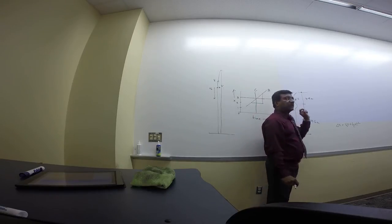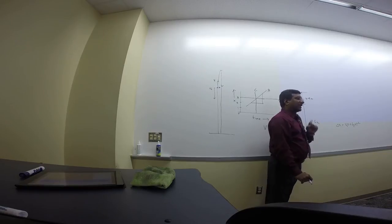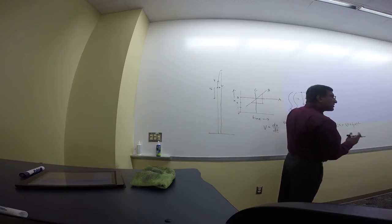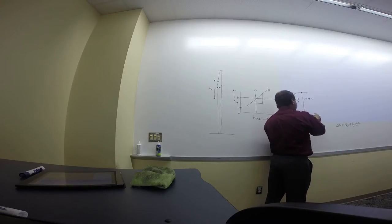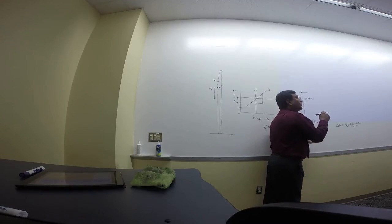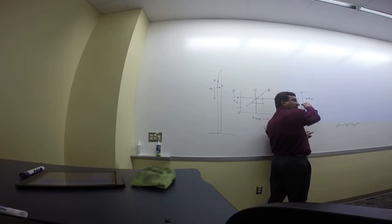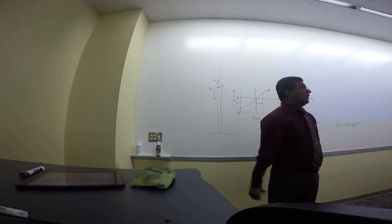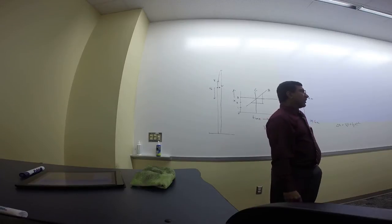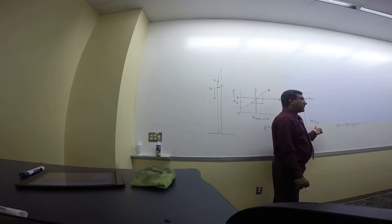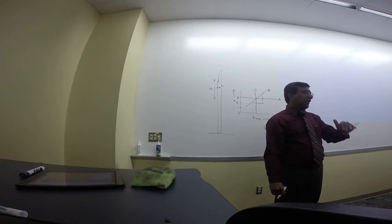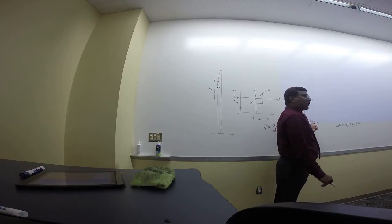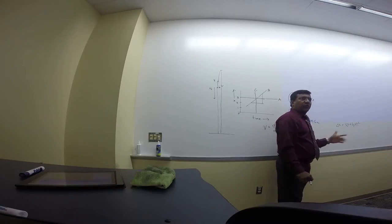Now using those distances to find the separation between the two dropped objects: in the first second, the first object moved 4.9 m while the second hadn't been dropped yet — separation is 4.9 m. After two seconds total, the first object has moved 19.6 m and the second has moved 4.9 m — separation is 14.7 m. After another second, separation is 24.4 m. The distance between them is increasing.